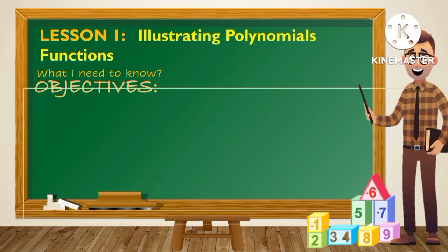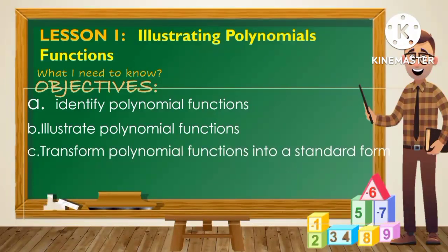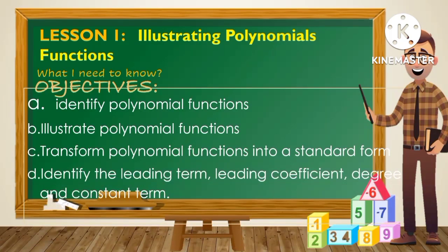Lesson 1: Illustrating Polynomial Functions. Before we proceed to our discussion, let me present to you our objectives. Letter A: Identify Polynomial Functions. Letter B: Illustrate Polynomial Functions. Letter C: Transform Polynomial Functions into Standard Form. Letter G: Identify the Leading Term, Leading Coefficient, Degree of the Polynomial, and Constant Terms.